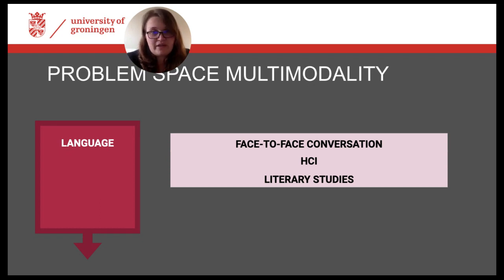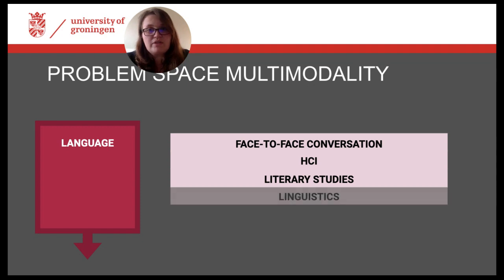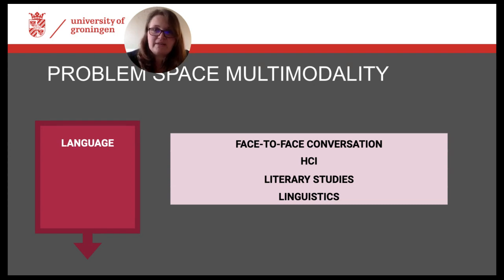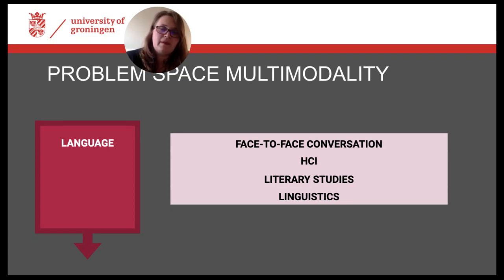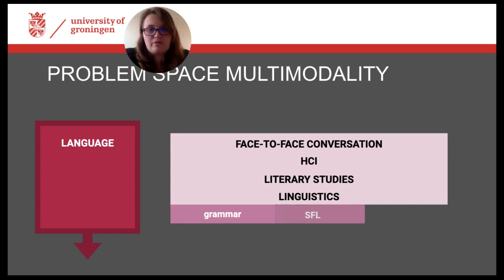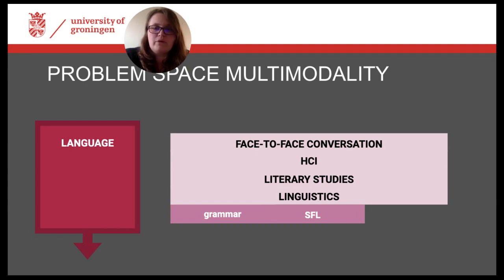Approaches within linguistics have broadened their interest beyond words and sentences. While looking at combinations of text and images, these approaches aimed at extending notions developed for the description of language and applying them to other forms of communication. This is where the Grammar of Visual Design was born — one of the groundbreaking and most influential publications by Gunter Kress and Theo van Leeuwen, still quoted and used by many multimodal researchers today. The broad reach of this book and approach is also based on the linguistic methods the authors drew upon, which mainly come from the area of Systemic Functional Linguistics.